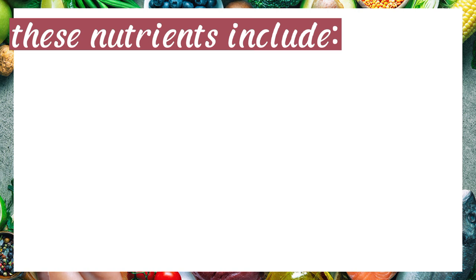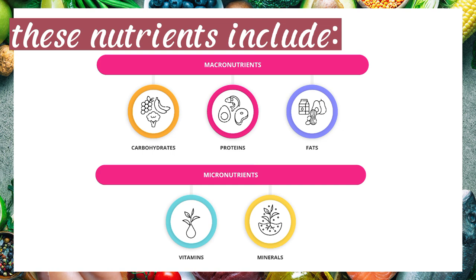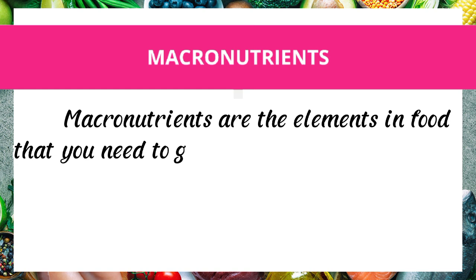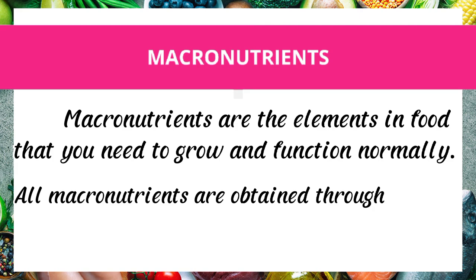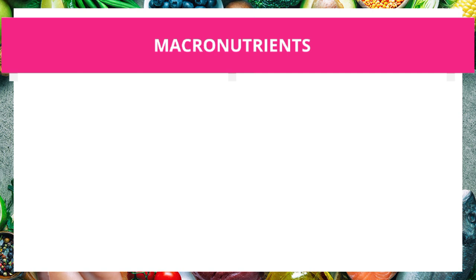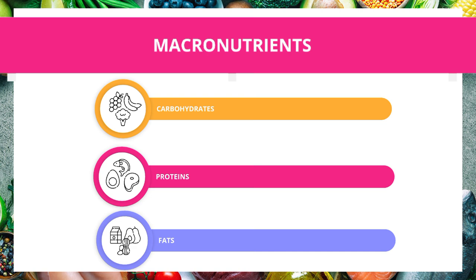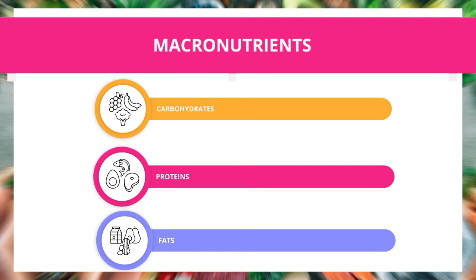These nutrients include macro and micronutrients. Macronutrients are the elements in food that you need to grow and function normally. All macronutrients are obtained through the diet as the body can produce them on its own. Macronutrients like carbohydrates, proteins, and fats are the three main suppliers of nutrition in your diet.